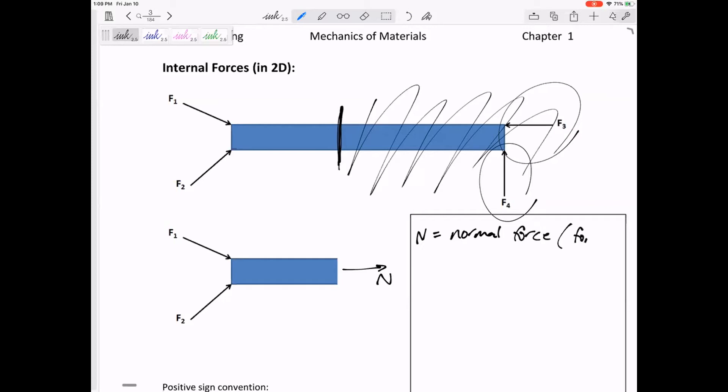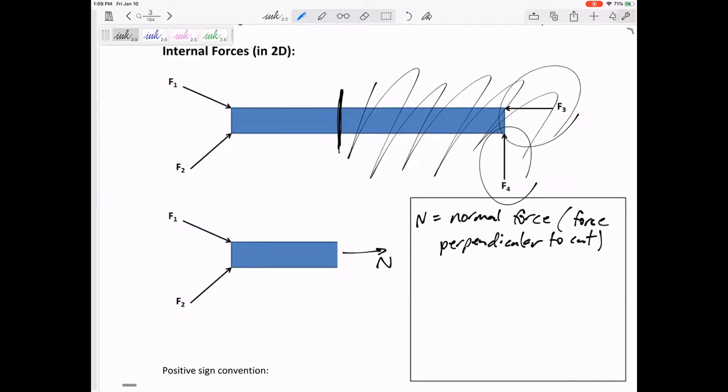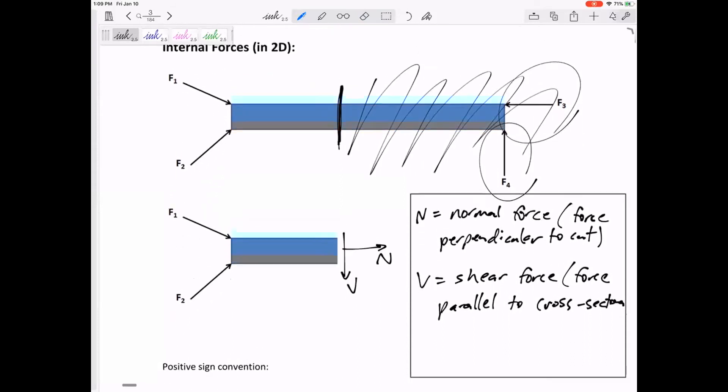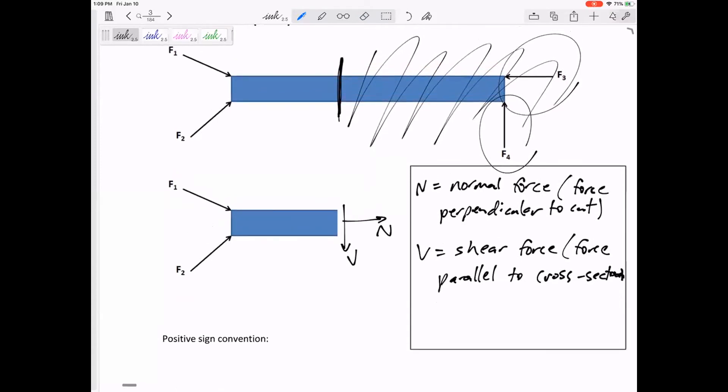This is the force perpendicular to the cut. V, if we're cutting it this way and coming from this direction, is going to be down. V is a shear force—the force parallel to the cut, or really, the force parallel to the cross-sectional area.